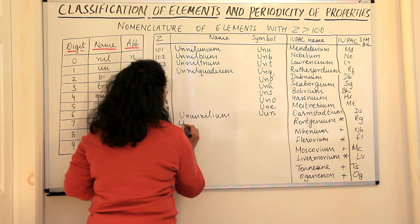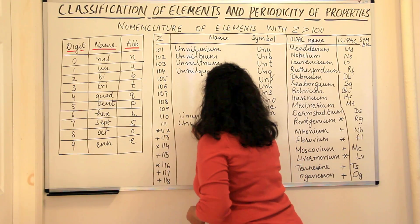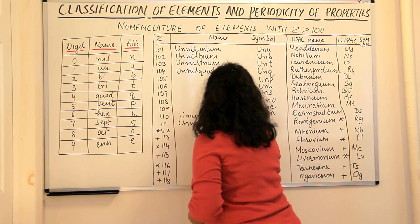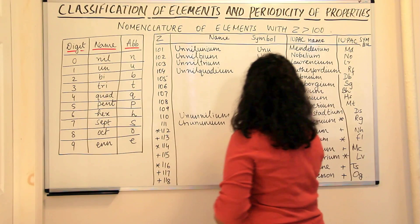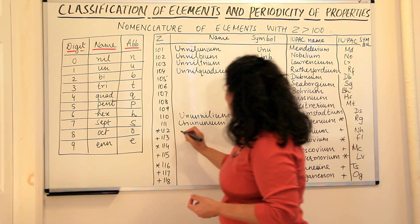And the next would be, how nice, 1, 1, 1, all the uns together. Unununnium. So U, U, U. So that's the symbol of the element.